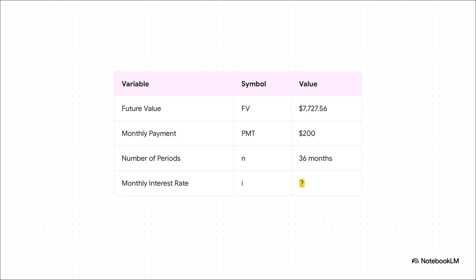So let's lay out all the clues to our mystery here. We know the future value, the FV, we know the monthly payment, or PMT, and we know the number of months. You see, the only piece of the puzzle that's missing is the monthly interest rate, which we'll just call I. That's our target.